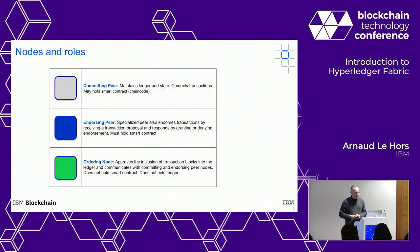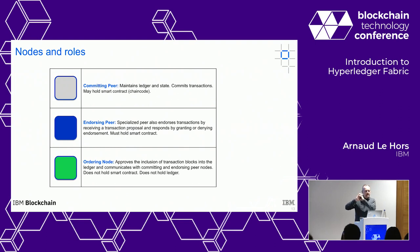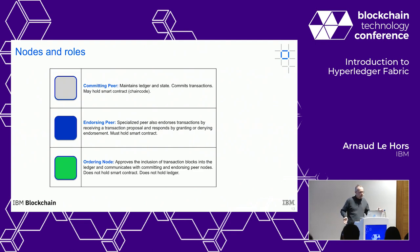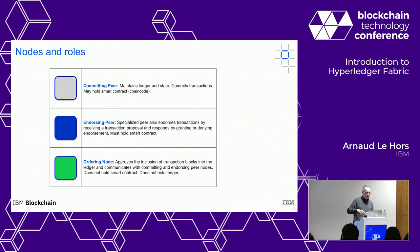Functionally there are three types of peers. Committing peers manage the ledger and may do nothing else, but they can also support chaincode and participate in endorsement. Ordering nodes focus exclusively on ordering. The reason we separated the ordering function is that deciding on a global transaction order is distinct from executing and validating transactions.